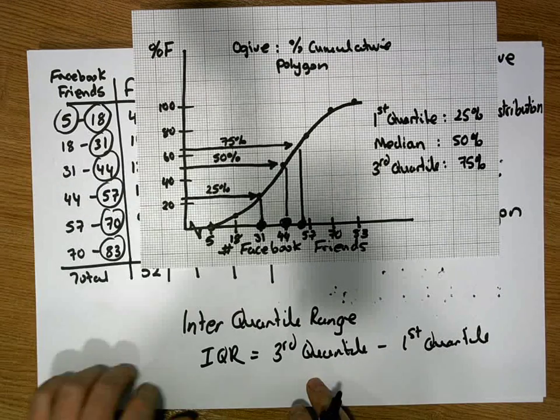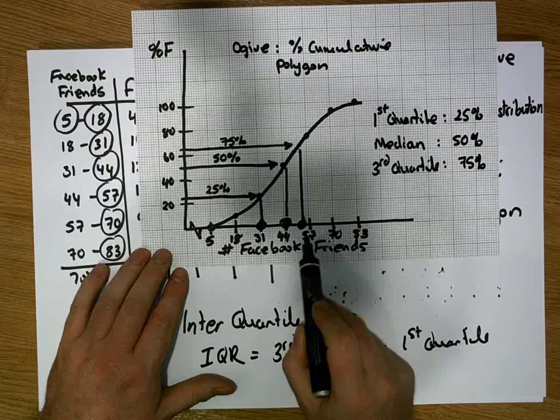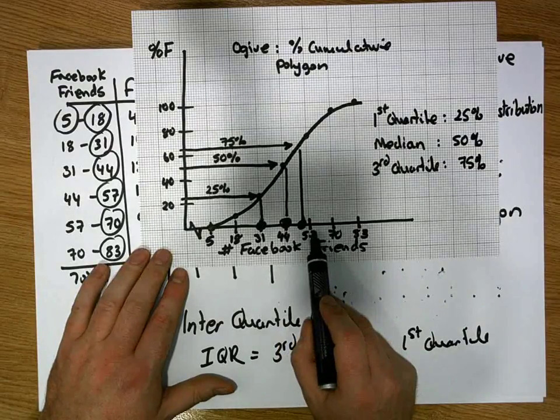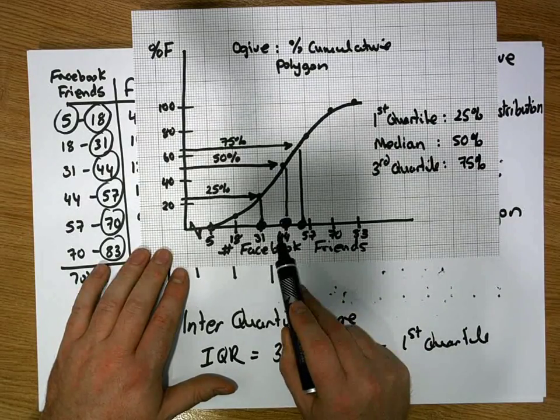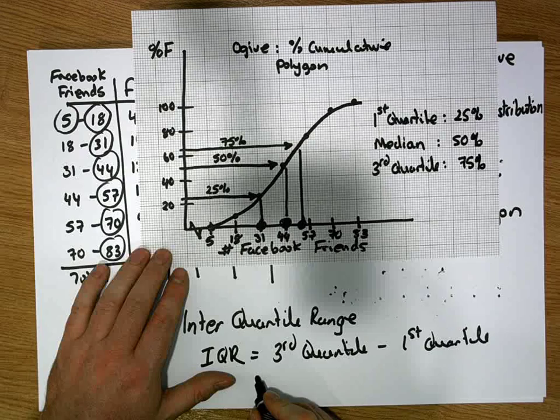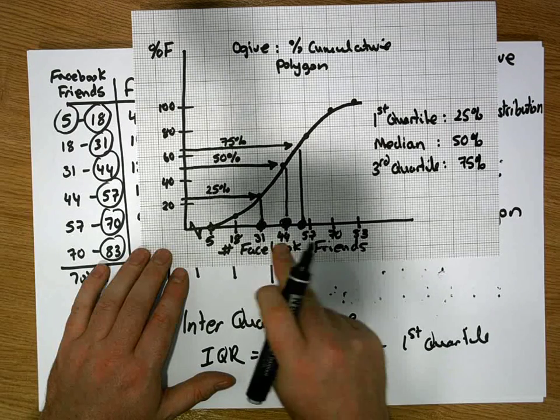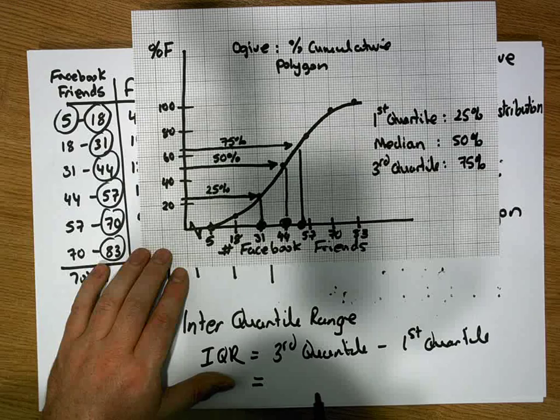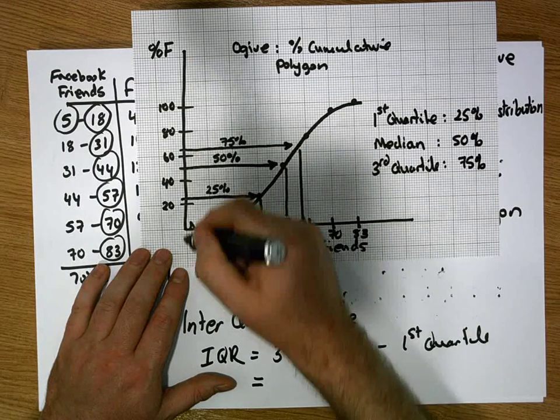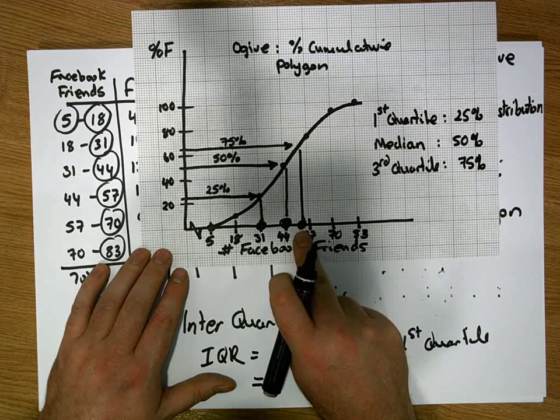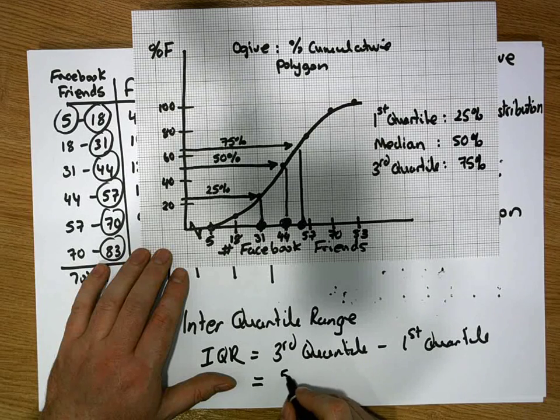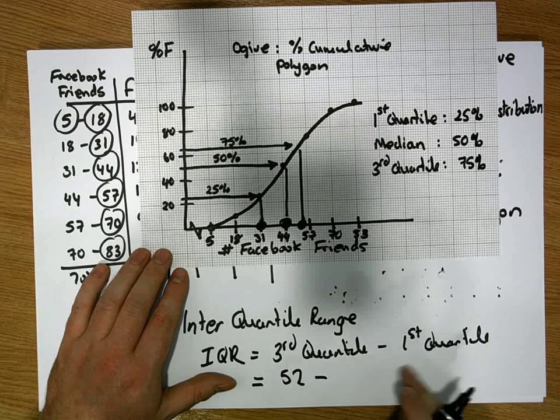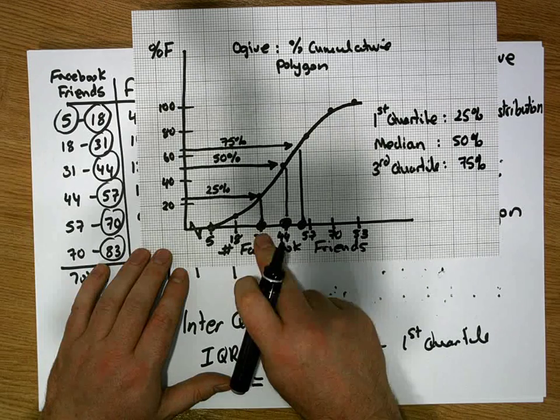The third quartile seems to be a value that's between 44 and 57, so it seems to be in around 51. Now I'm only estimating this here. My marker is very big. This particular dot is overlapping a number of squares, but you'll do this with pen or pencil and you can be more accurate. So as I say, this is in around maybe 52 minus the first quartile, which seems to be in around 31.